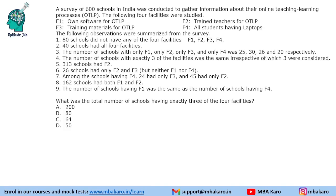Hello everyone, welcome to Aptitude Jab. This set is from CAT 2020 Slot 3 DILR. It says that there was a survey conducted on 600 schools in India to gather information about their online teaching-learning process. There are 4 facilities: F1, F2, F3, and F4. You need not worry about which facility is which — you just have to remember the codes.